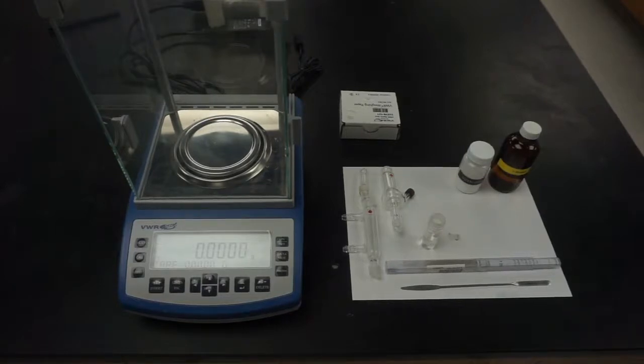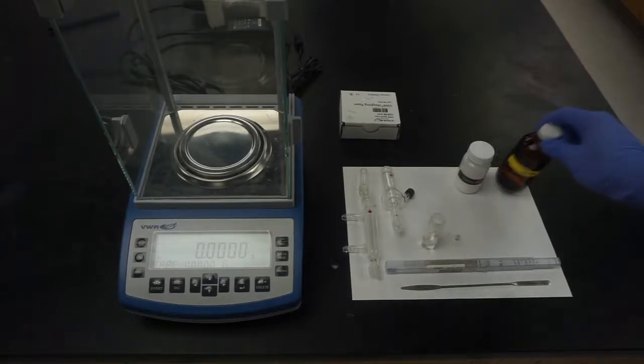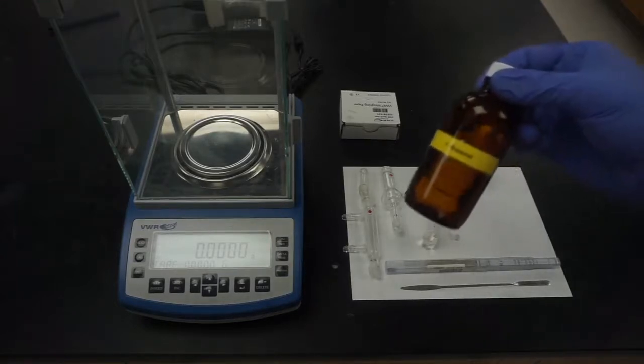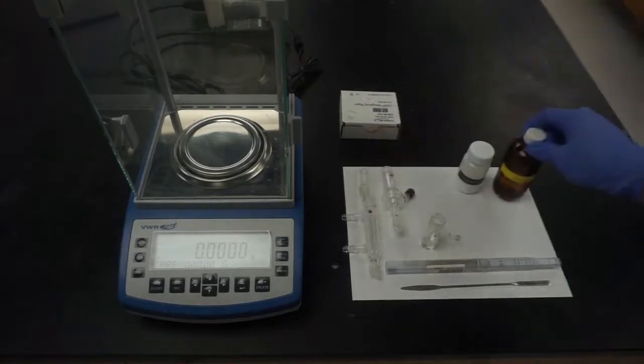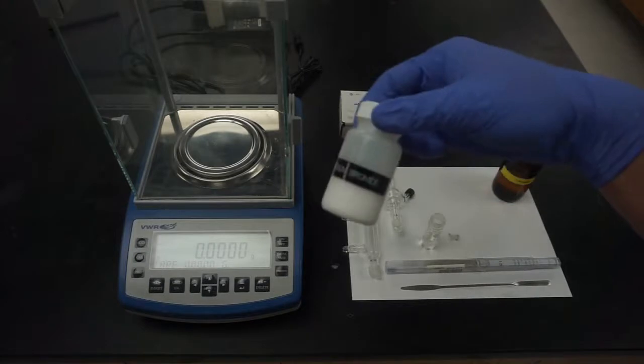First, start with the preparation of all necessary equipments and reagents. We're going to synthesize N-butyl bromide with 1-butanol and sodium bromide.